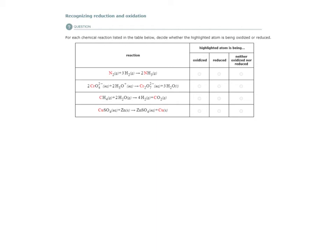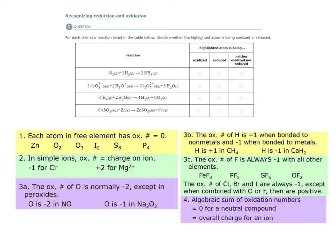Let's recognize which atoms are reduced or oxidized. The first thing we want to do is pull up our rules so that we know how to assign the correct oxidation numbers. Here they are, now we're ready to go.